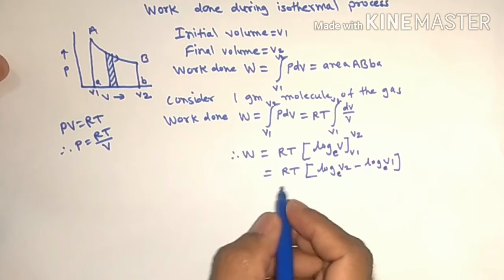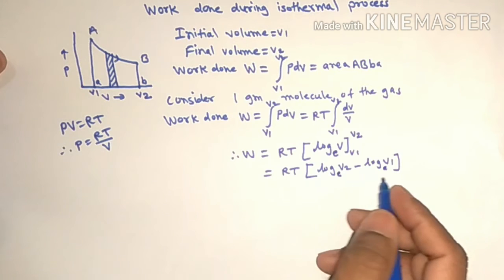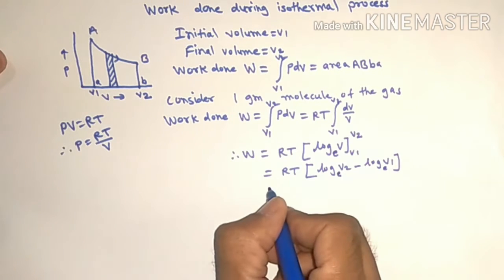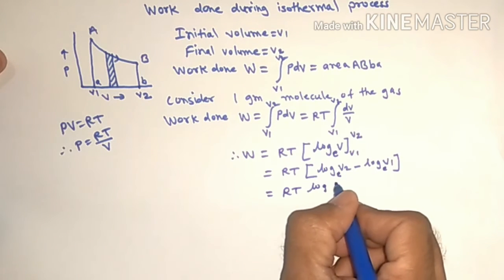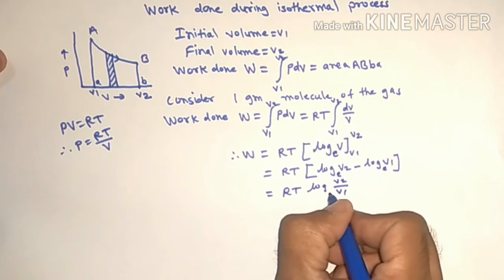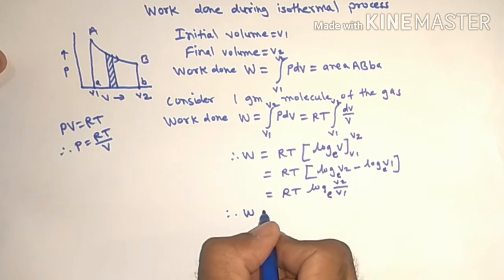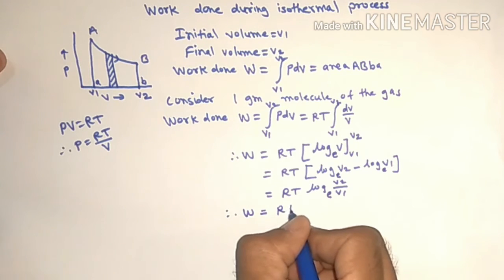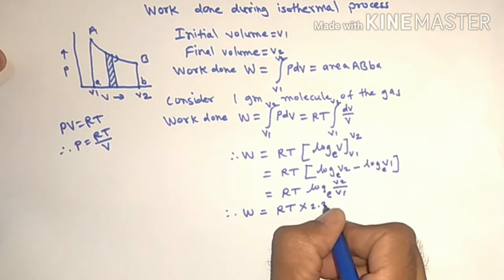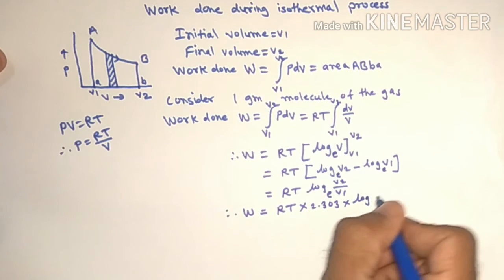Now we have to convert this e to base 10. First write the step RT is equal to log of V2 upon V1 to the base e. Converting this base e to base 10, we have to write RT into 2.303 into log of V2 upon V1 to the base 10, equation first.